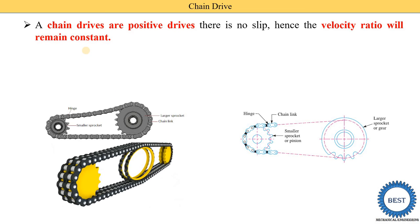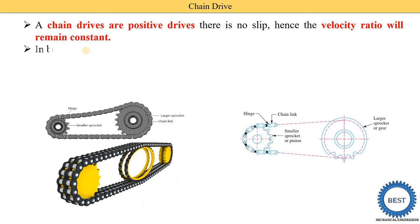Compared to belt drive, what is the advantage of chain drive? Chain drives are called positive drives. There is no slip. Hence, the velocity ratio will remain constant.